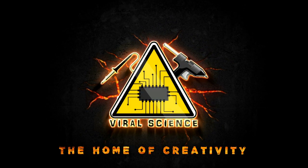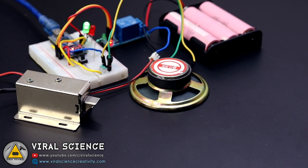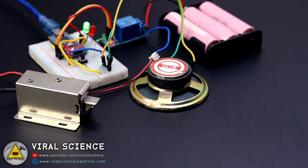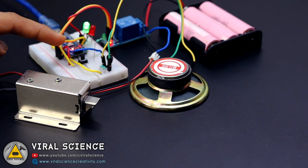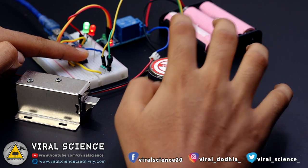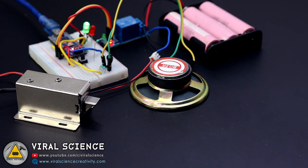Viral Science, the home of creativity. Hey friends, welcome back. In this video I will show you how to make a knock pattern door lock with Arduino. To register a pattern, just hold on this button and knock in your own pattern, and release the button to save the pattern. And now the pattern is registered and you can use this door lock.